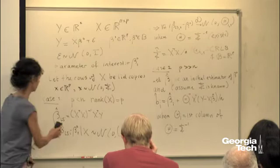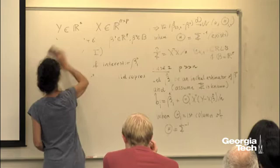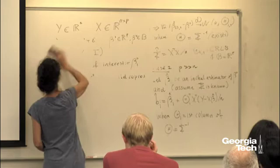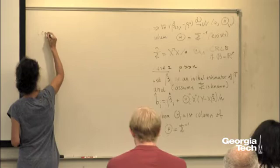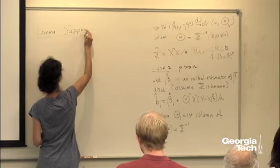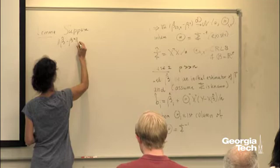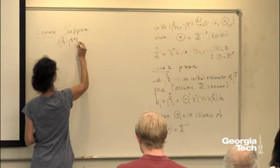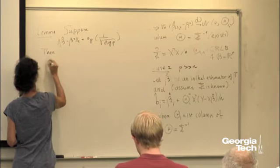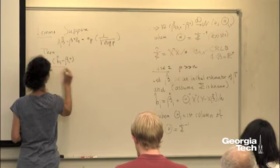This one-step estimator is asymptotically normal under some conditions. Let me put the lemma up. Suppose you have some rate of convergence for your initial estimator in L1 norm of small order 1 over square root log p. Then square root n times the de-biased estimator is asymptotically normal.